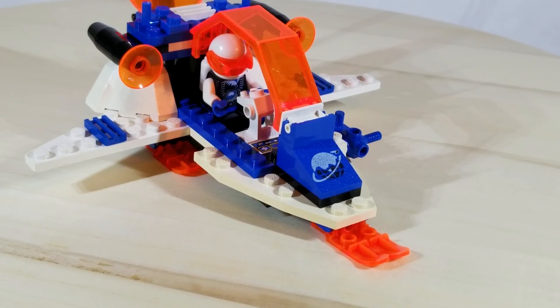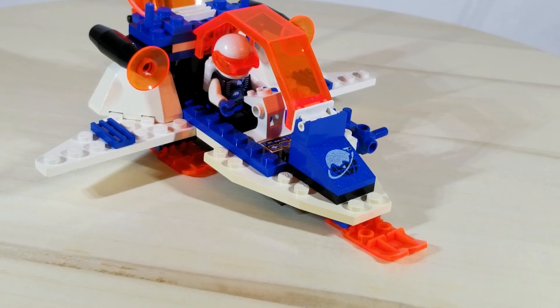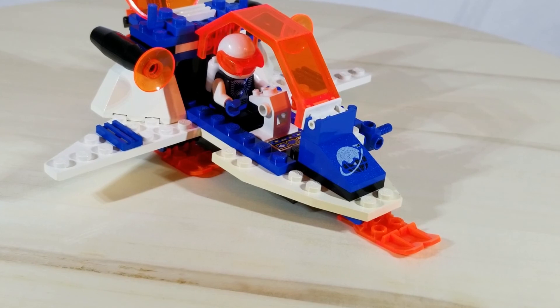It featured a 2x3 sloped printed brick on the front, which was really cool because they were printing all their elements back then, or a majority of them. It also featured that control panel up front as well.